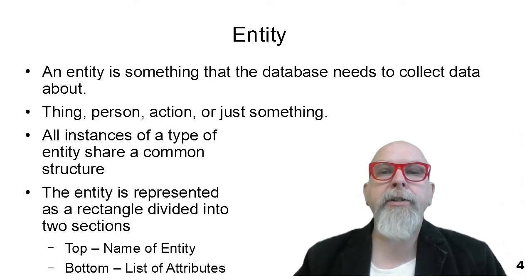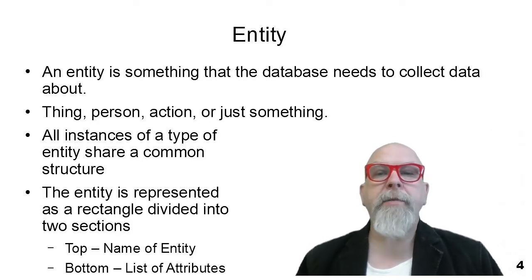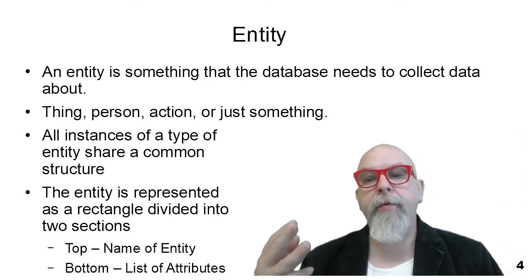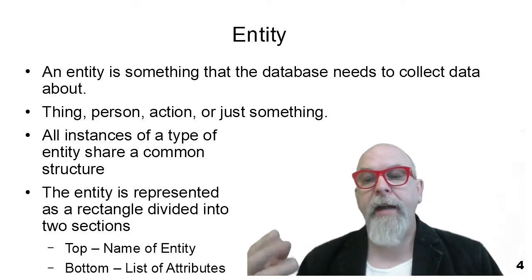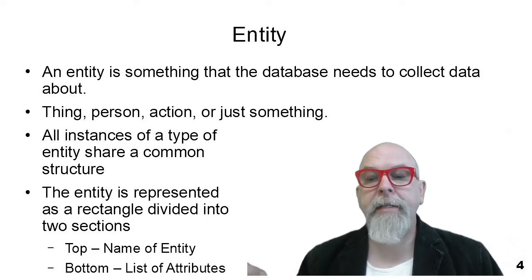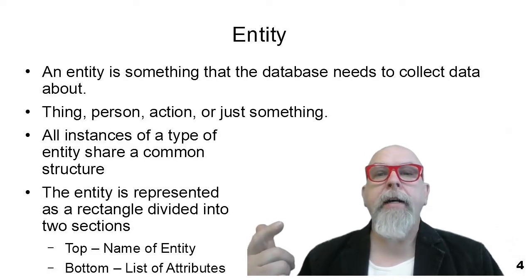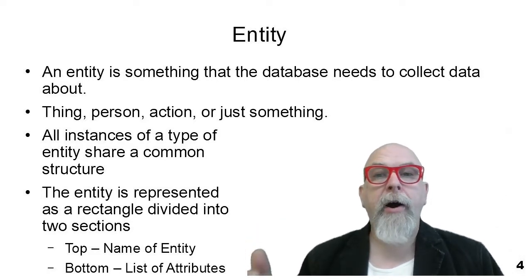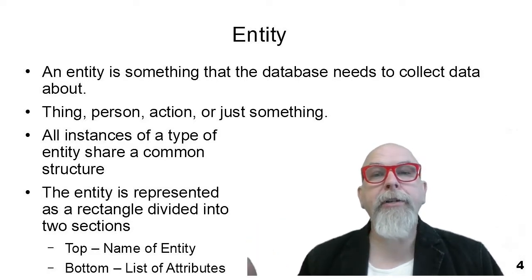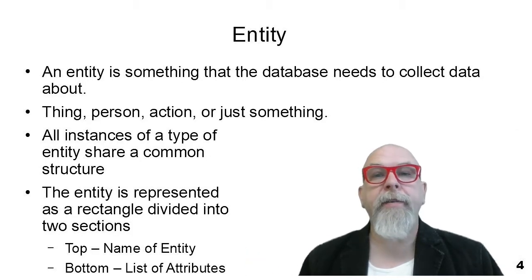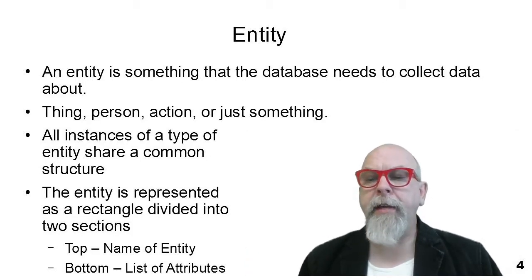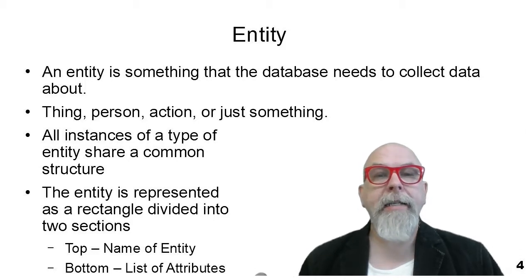An entity relationship diagram is made up of three main things: entities, attributes — which are part of entities — and then the relationships between the various entities. The first thing I want to do is go into what is an entity.